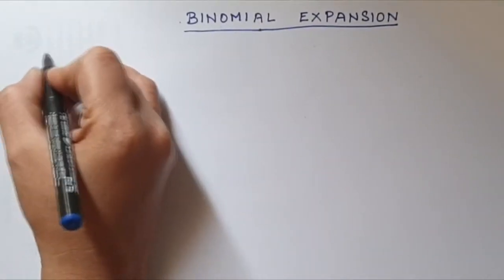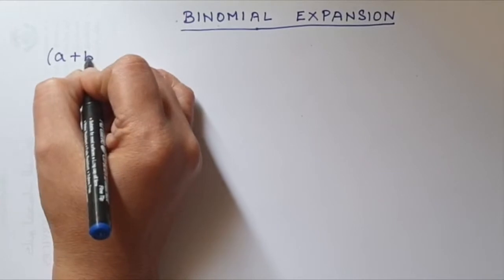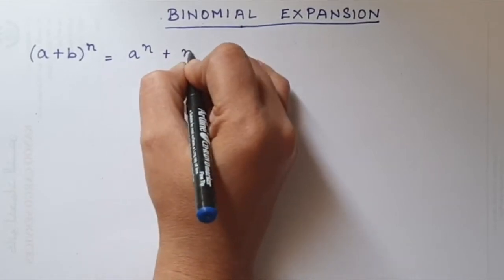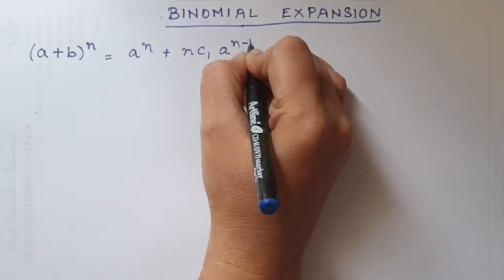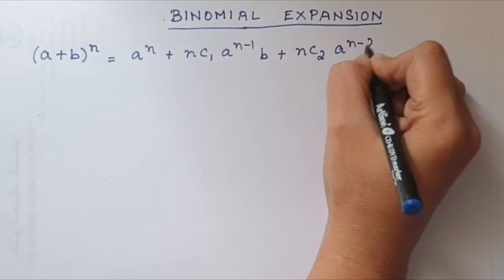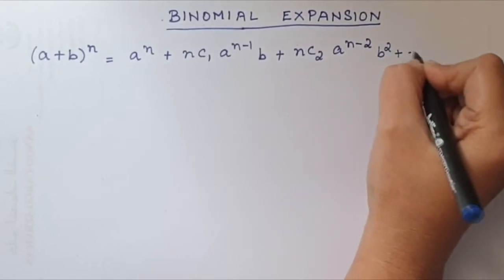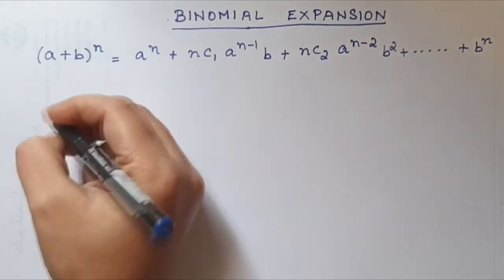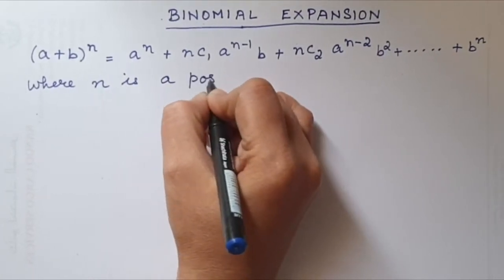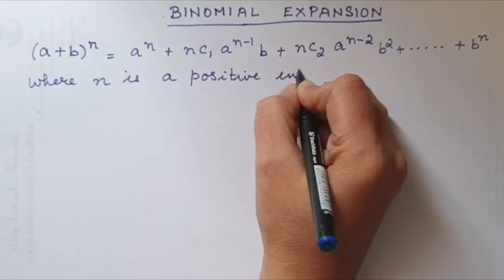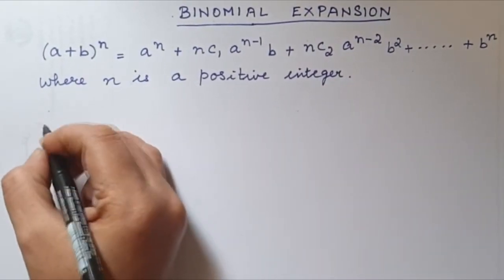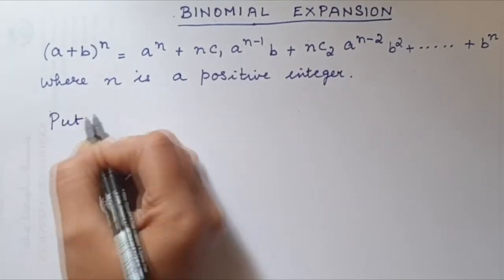The binomial expansion: (a + b)ⁿ = aⁿ + nC1·aⁿ⁻¹·b + nC2·aⁿ⁻²·b² + ... + bⁿ, where n is a positive integer. In this expansion, if we put a equal to 1 and b equal to x, then it becomes a special form.